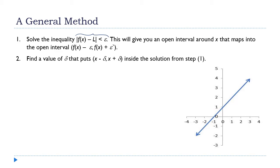Once we've solved this, we're going to end up with something like a number less than x less than another number. That tells me every x value in that interval gets mapped into this interval. Remember visually how this works — if I think the limit is 3, we go up epsilon and down epsilon, and we need a corresponding interval on the x-axis that maps into it.